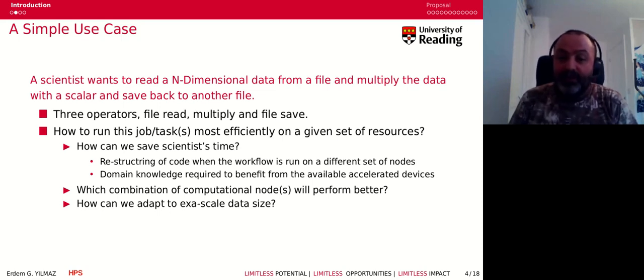How can we run these three tasks more efficiently when we are given a set of resources? How can we save scientists time when he or she wants to restructure their code or this workflow when it's time to run it on a different set of nodes or hardware? Every time these modifications are required, the person in question requires some domain knowledge to make the modifications because every accelerated device or new environment will require some modification to benefit from the available computational capacity.